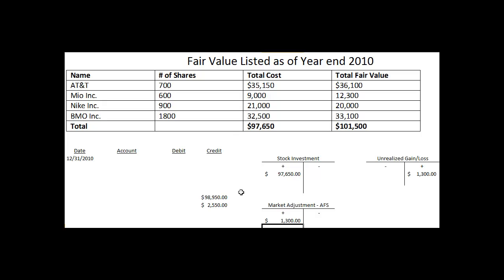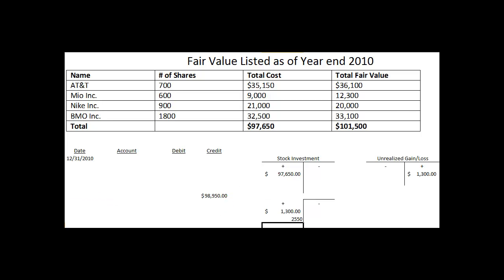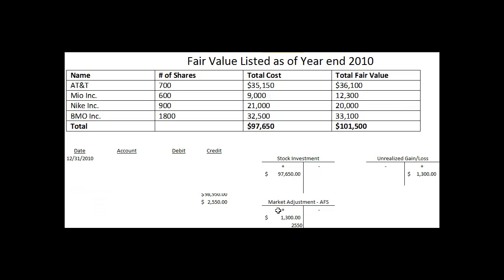So we have to make another market adjustment for $2,550. The $2,550 is added to the value of the stock, which marks the portfolio to market.